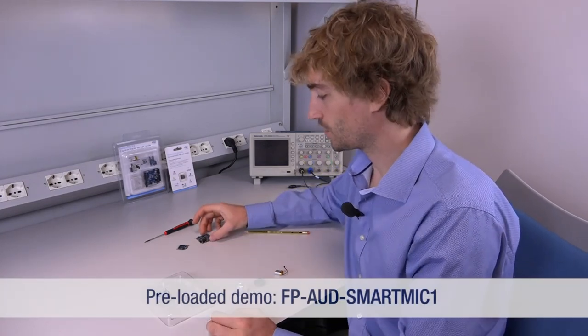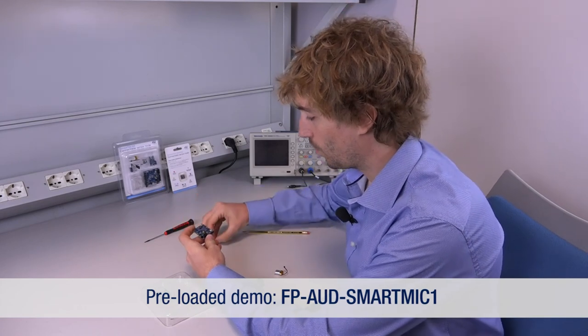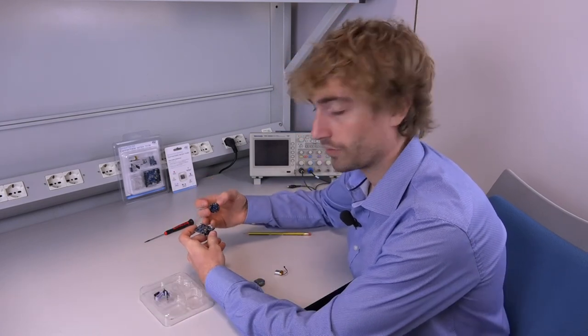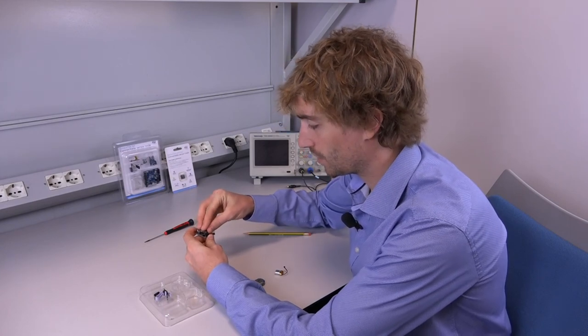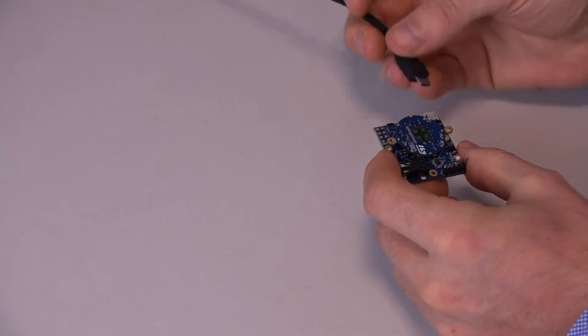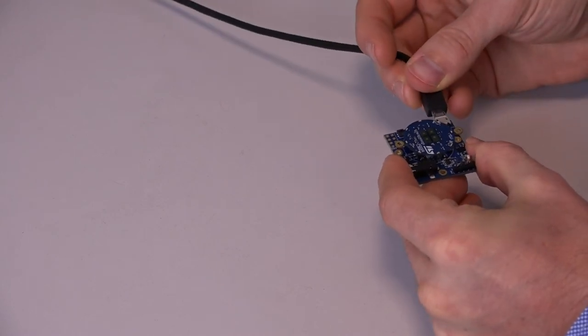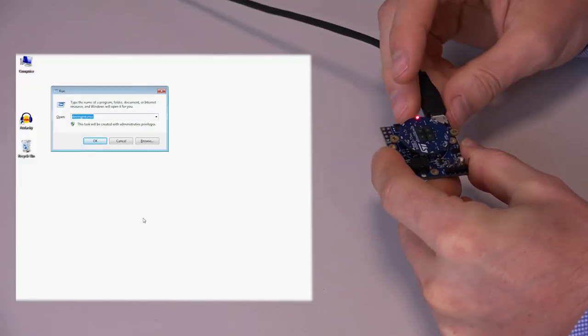Now we'll see how to start the preloaded demo. We need to plug the BlueCoin on top of the coin station, paying attention to the alignment of the connectors. At this point we can power on the system, connecting it to a PC using a microUSB cable.